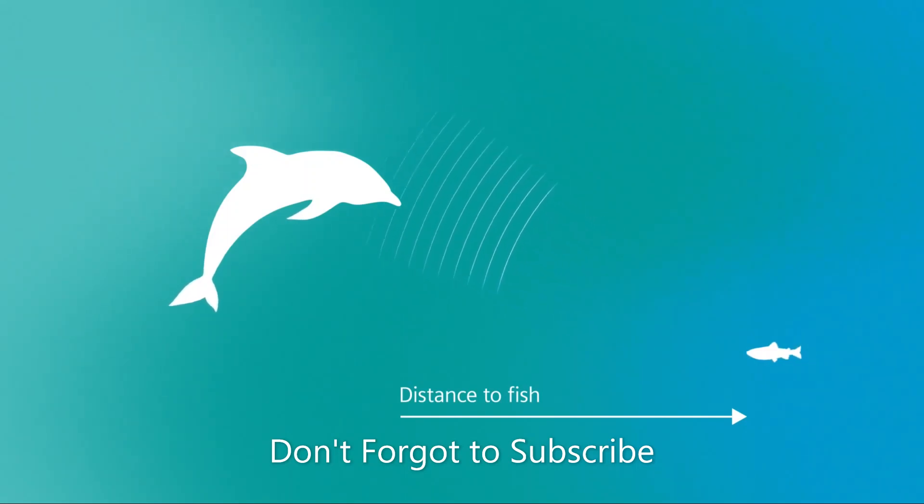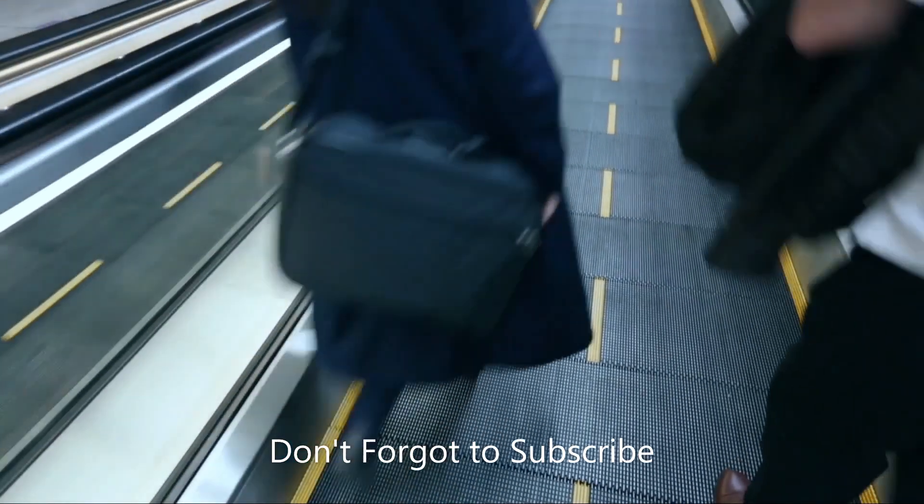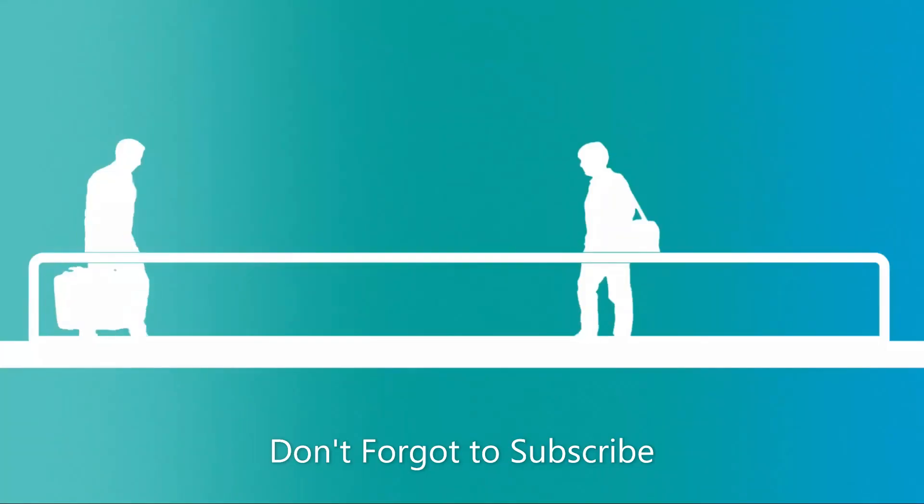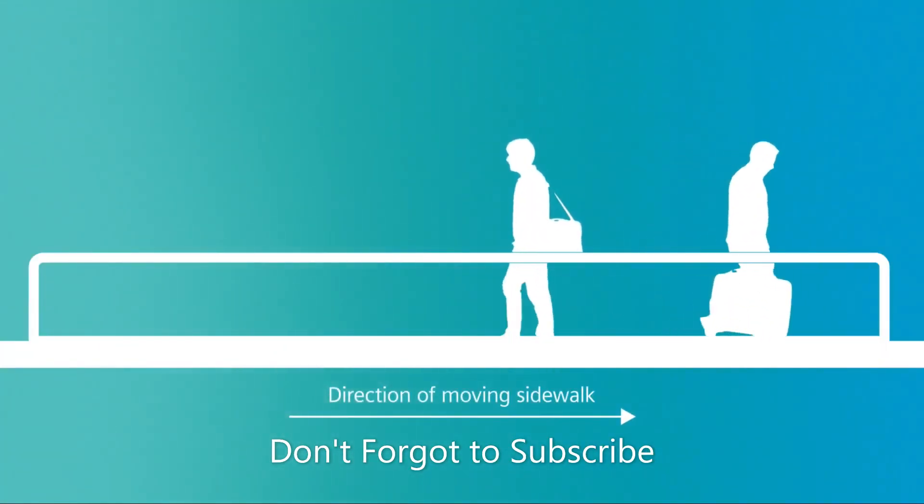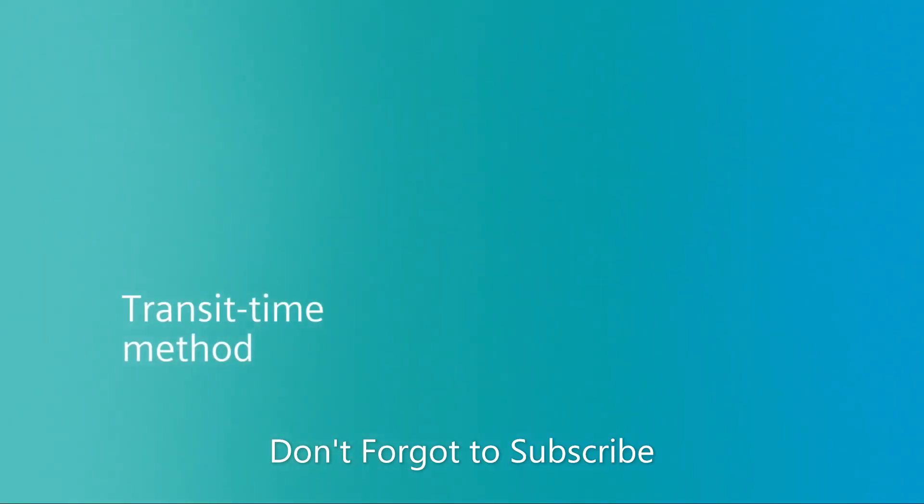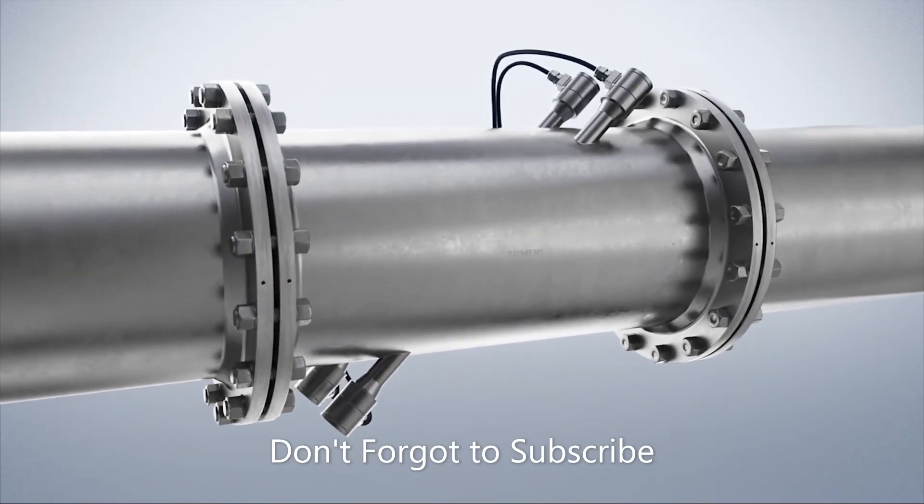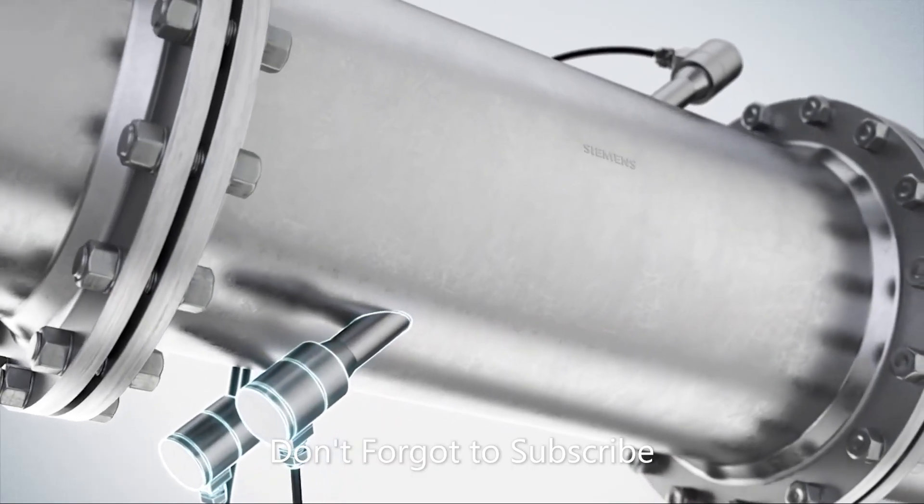Structure diagram of ultrasonic flow meter: Under both flow conditions, the upstream wave will flow at a lower rate than the downstream wave. As the liquid flows faster, the difference between the upstream and downstream times will increase. The flow rate is determined by the upstream and downstream times processed by the transmitter.